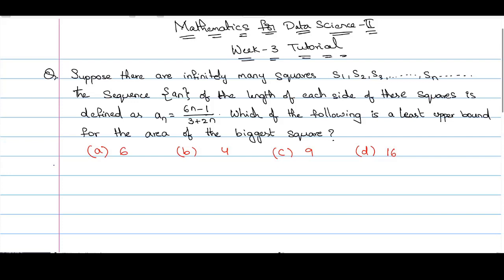Now, if we observe here, the sequence an is an increasing sequence. So I leave it to you guys to check whether this is an increasing sequence or not. This will be an increasing sequence, which implies ai is greater than aj if i is greater than j. So the length of side of each square increases as n tends to infinity, which implies the area also increases.